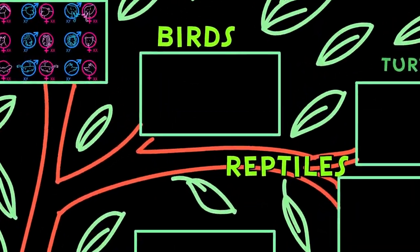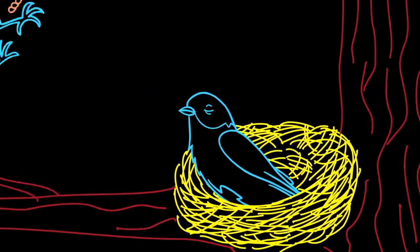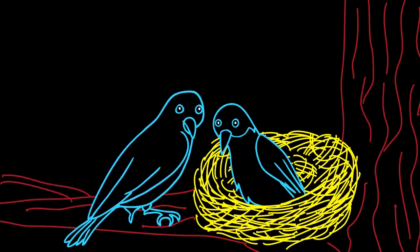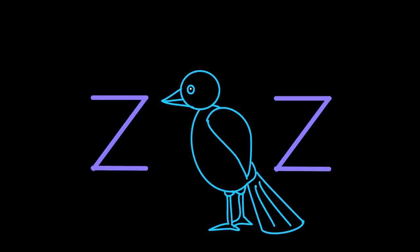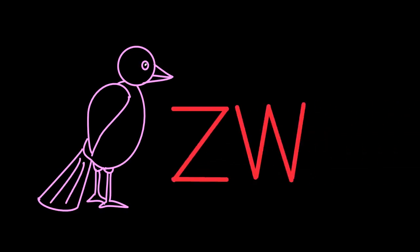There are other groups of animals that also have genetic sex determination, but their systems can be pretty different from ours. Birds and some reptiles have their sex genetically determined, but instead of the sex being determined by dad, their sex is determined by mom. In those groups, a pair of Z sex chromosomes produces a male.